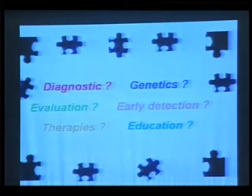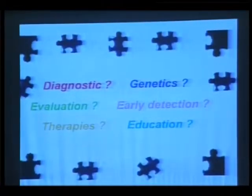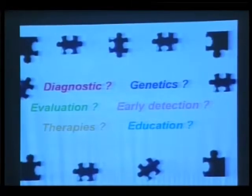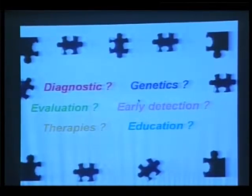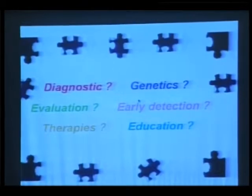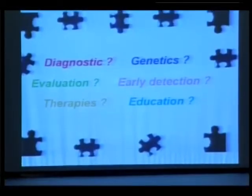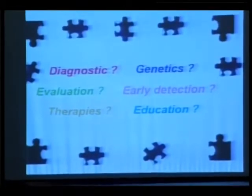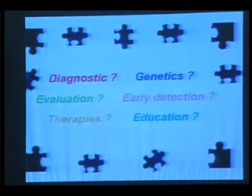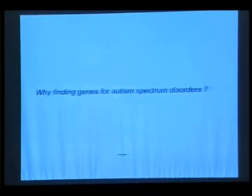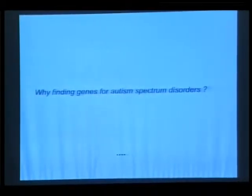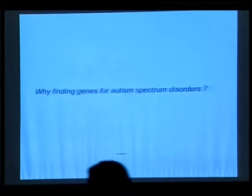This slide shows that I like the double helix, I like ATGC, but it's really not the only thing which is important in autism. Thank you for attending this genetics session. I still like very much the double helix. I will speak about genetics, and the question is: why find genes for autism spectrum disorders? I will give you my answer at the end of the talk.